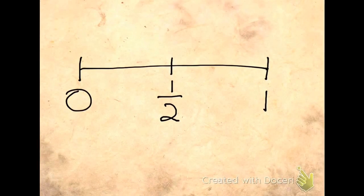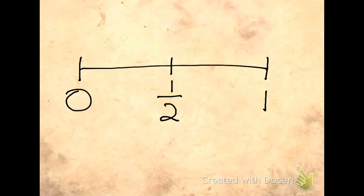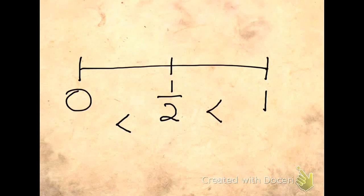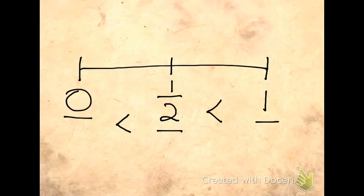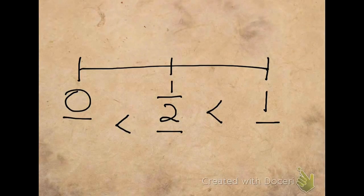Today, we're going to compare fractions that don't have the same denominator or numerator. We're going to use benchmark fractions to help us figure it out. Let's look at 0, 1 half, and 1, because this is going to help us figure out our benchmark fractions. We know that 1 half is greater than 0, and 1 is greater than 1 half. Using what we know about 0, 1 half, and 1 is going to help us solve problems when we compare fractions.